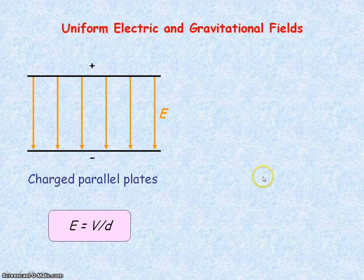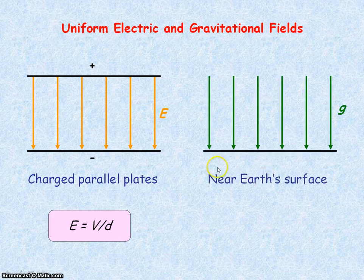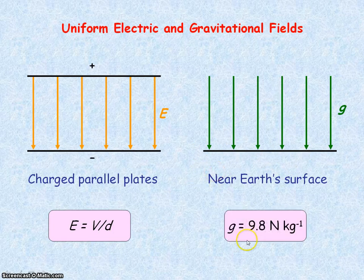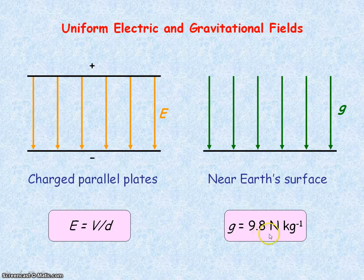The gravitational field strength is uniform near the Earth's surface, where the surface is considered flat. Near the Earth's surface, the gravitational field strength is equal to 9.8 newtons per kilogram.